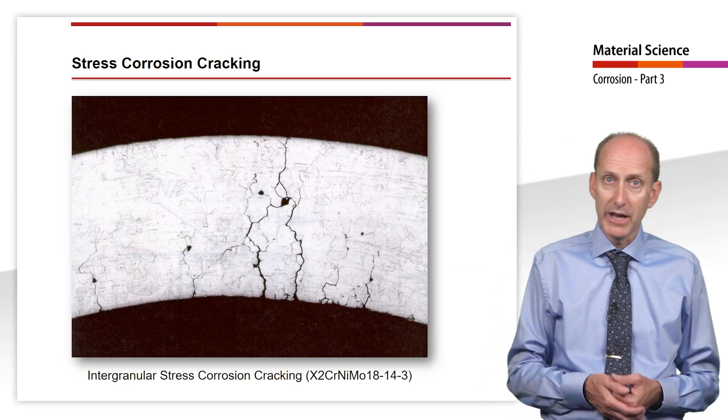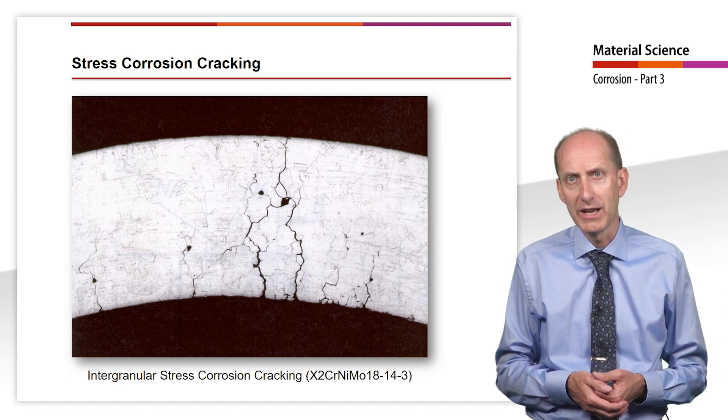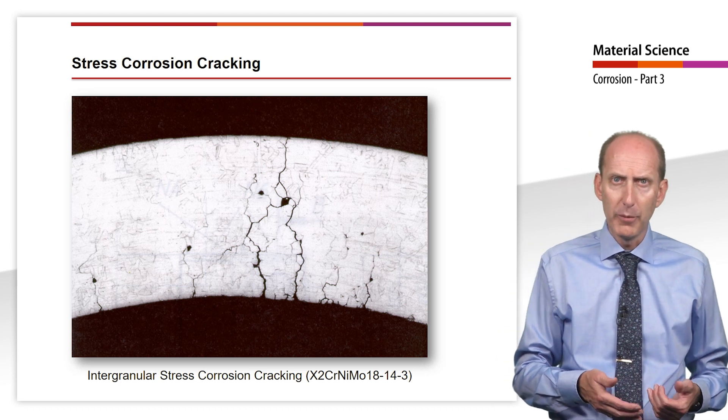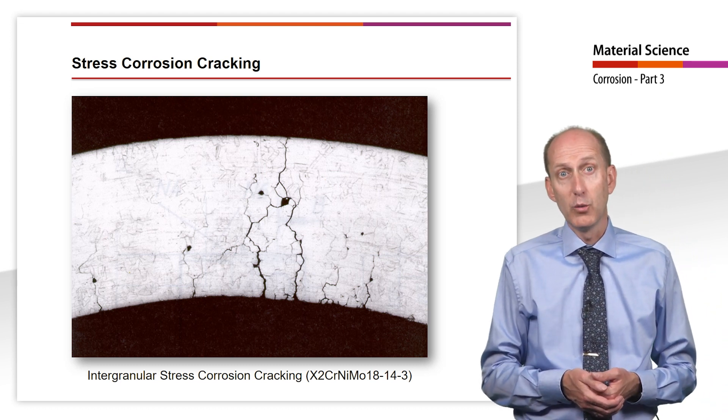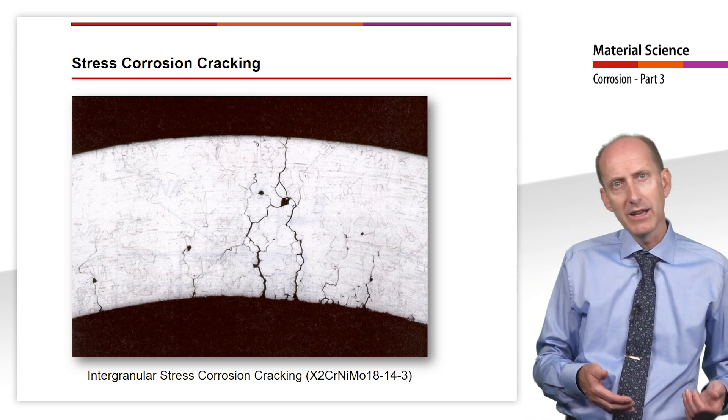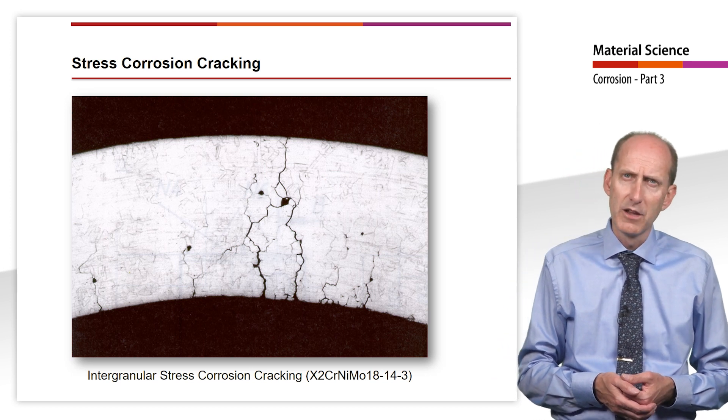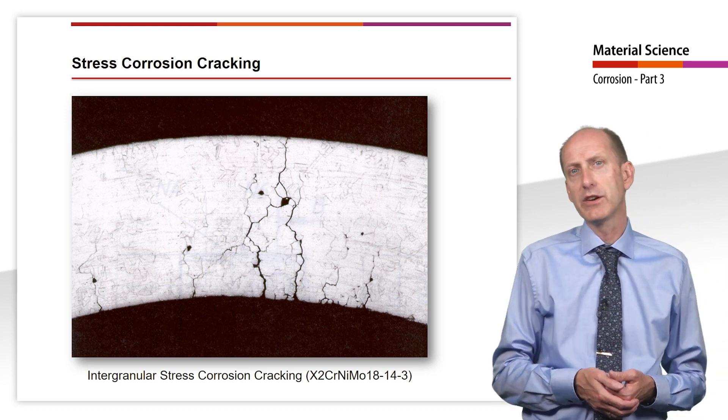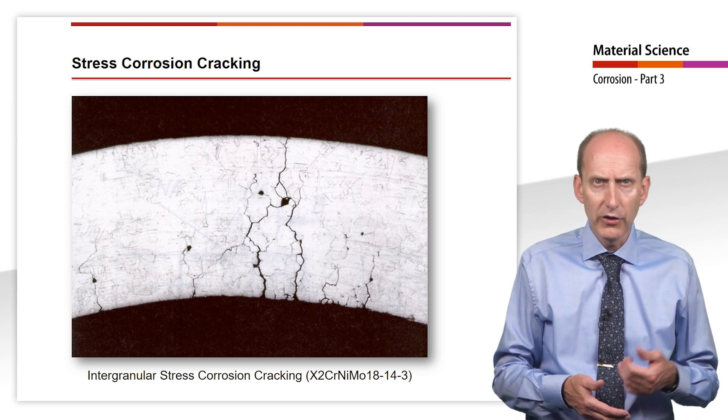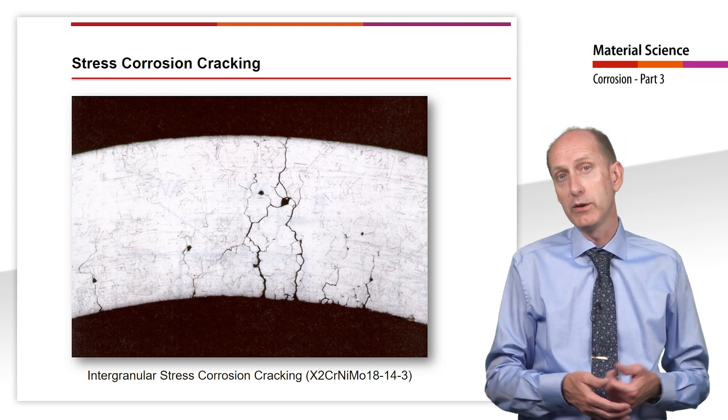This photograph shows a partial section of a tube from a shell and tube heat exchanger. The tubes were formed by cold working, which introduced such severe stresses into the material that intergranular corrosion occurred in the heat exchanger.